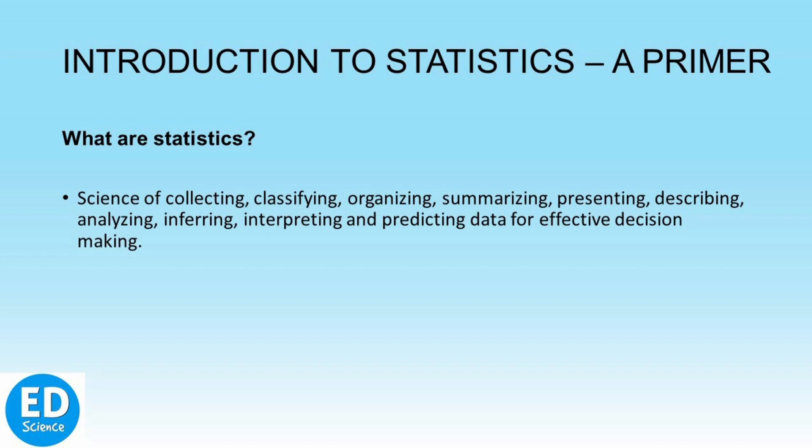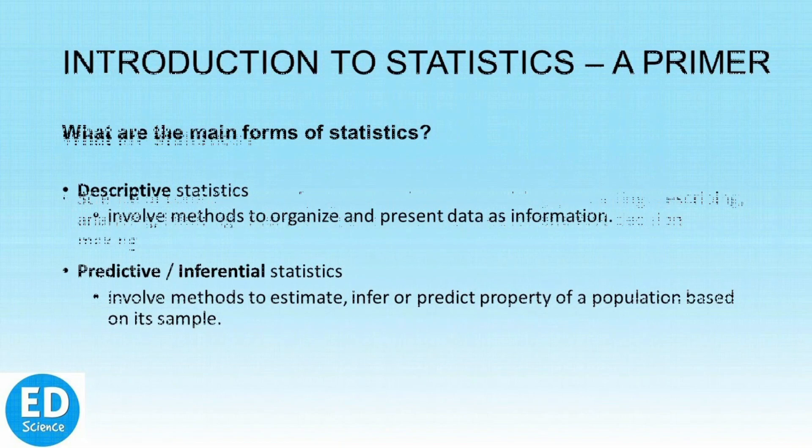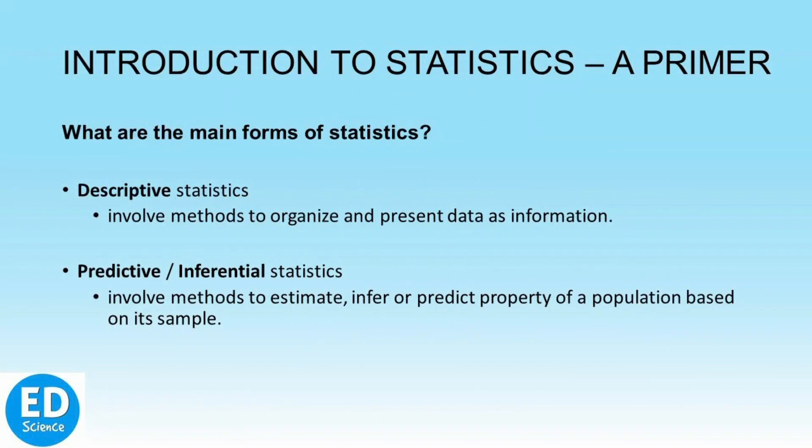What are the main forms of statistics? Descriptive statistics and predictive statistics. As the word indicates, descriptive describes data, predictive predicts data. To put simply, descriptive statistics use samples to describe data, predictive statistics use samples to estimate, infer, predict data. Descriptive statistics involve methods to organize data and present data as information in a way that everyone can understand, as in storytelling.